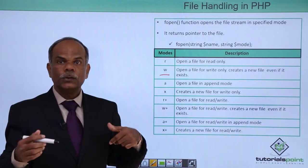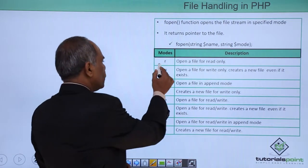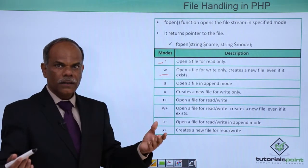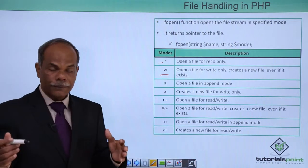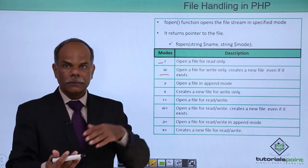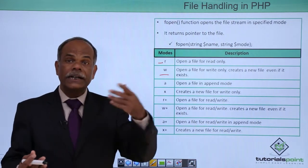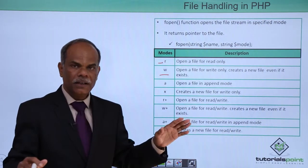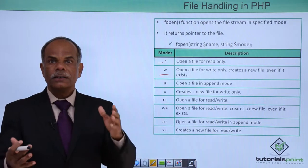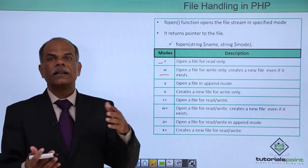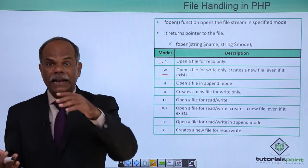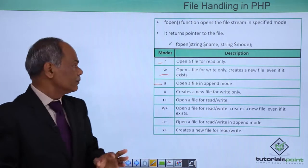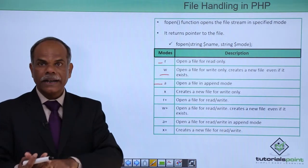If you want to read the data from an already existing file, you have to open it in read mode — open a file for read only mode. Then, if a file is already present and you want to add the data into it without destroying it — remember that when you open it in w mode the earlier file contents will be destroyed — you want the file to be opened in writing mode but adding the data at the end. For that purpose, you have an append mode. So these are the three basic modes: read, write, and append.